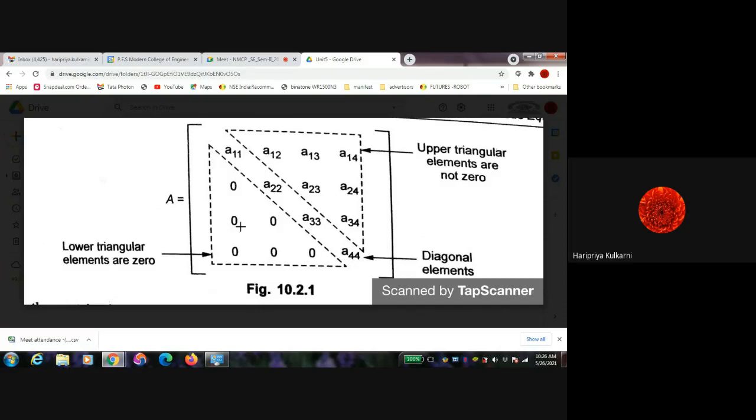In Gauss elimination we have to eliminate either upper triangular or lower triangular. Any one of it we are eliminating, means making it zero. And in case of Gauss-Jordan elimination method, understand the difference...